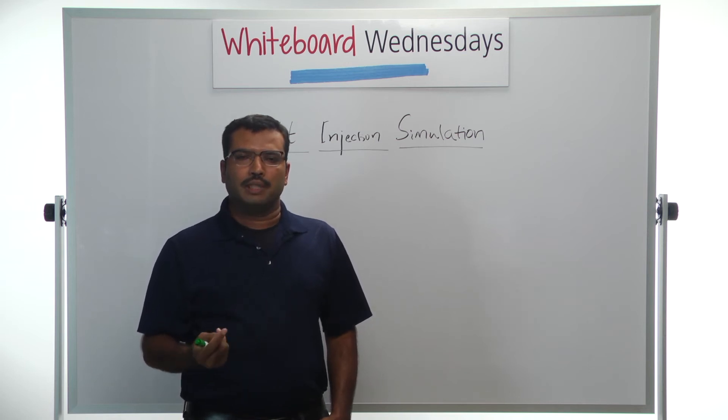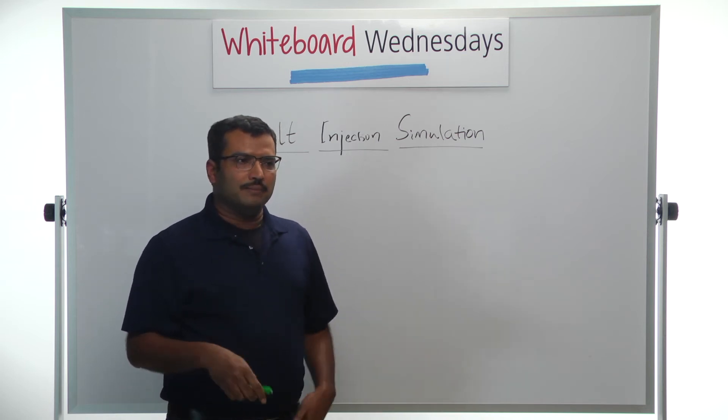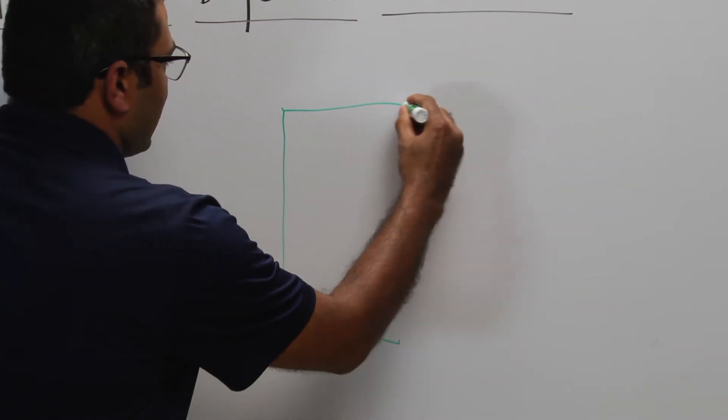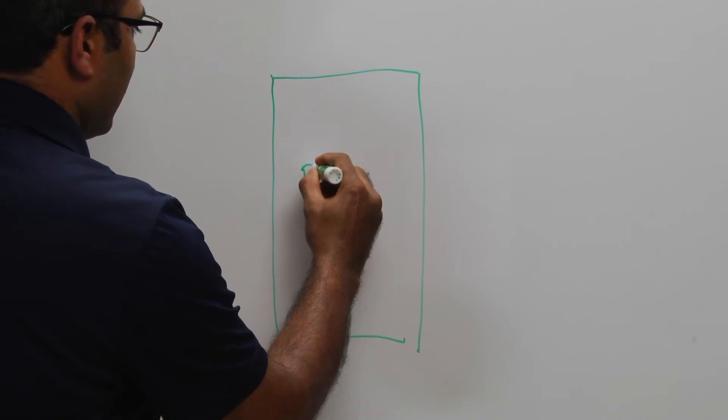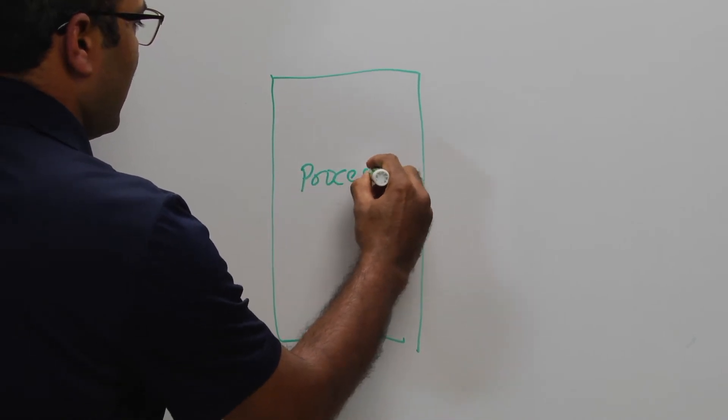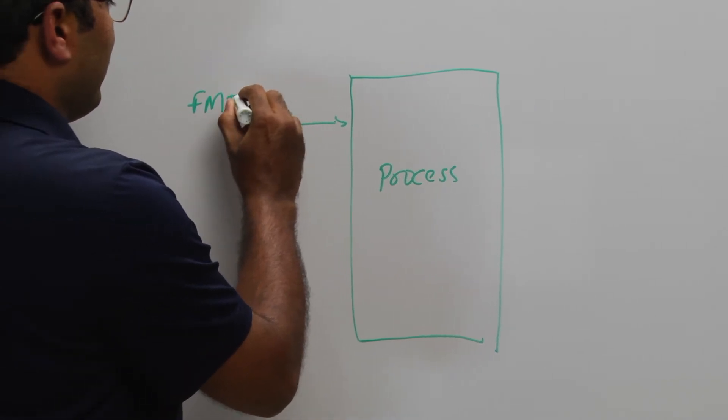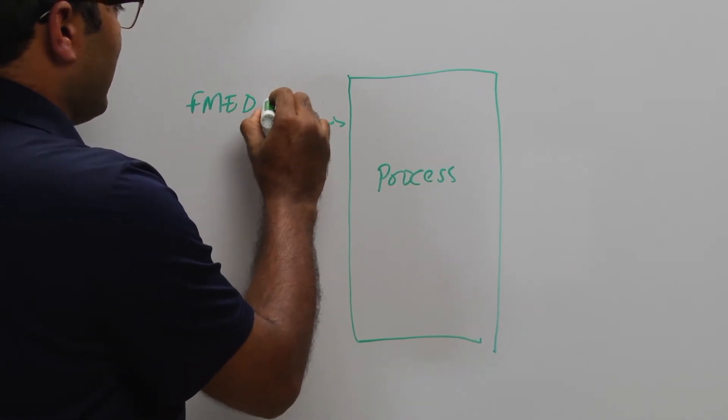How would we go about doing it? So I'll just draw a small process diagram here. To perform fault injection simulation as a process, you need an input from FMEDA, which is failure mode effect and diagnostic analysis.